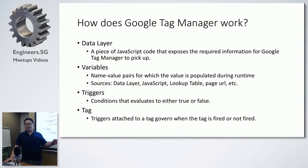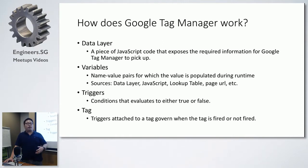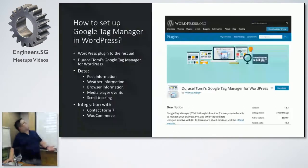Triggers are conditions under which tags will fire. The structure is very fluid — you can trigger on page load, on specific events, on button clicks, or even on video plays. Tags are your Google Analytics tags or your media tags.